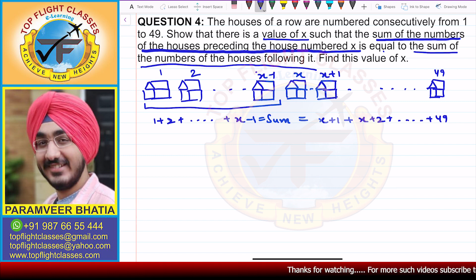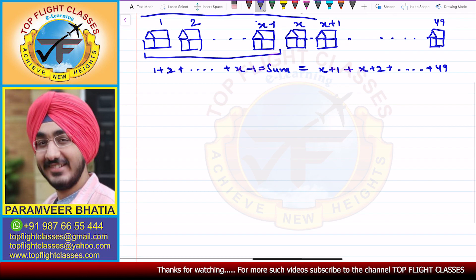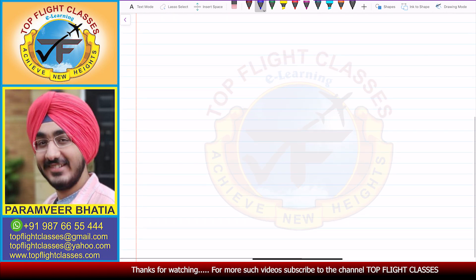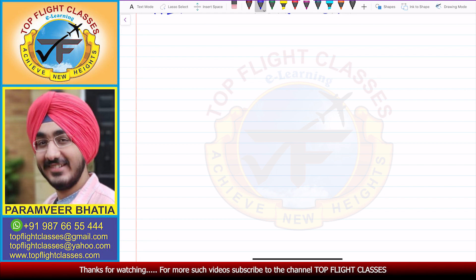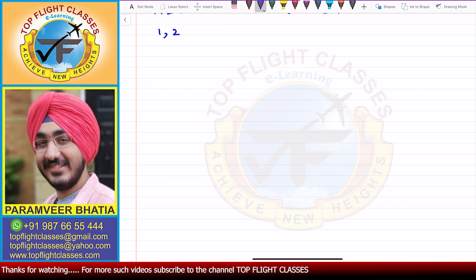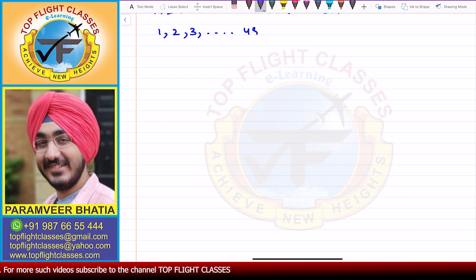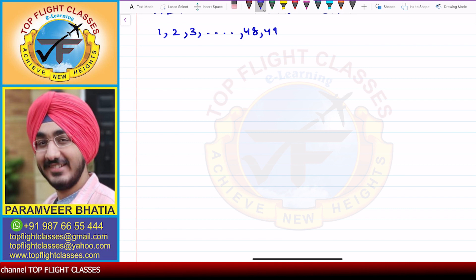Now we need to equate these two sums to find the value of x. The house numbers 1, 2, 3, ... 48, 49 are consecutive, so you can clearly see that they form an AP with d = 1.